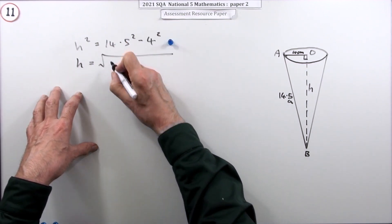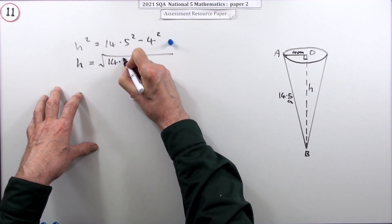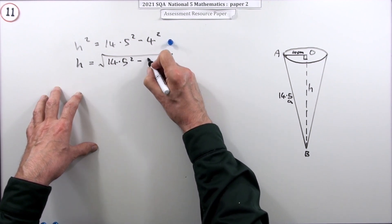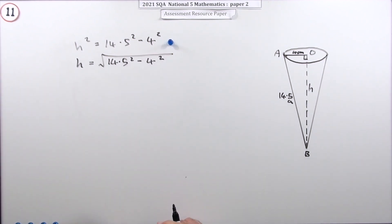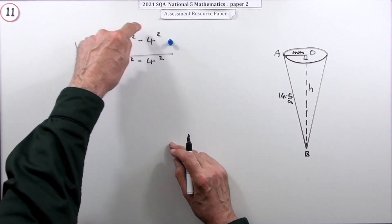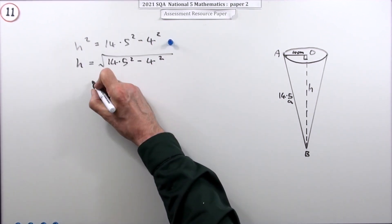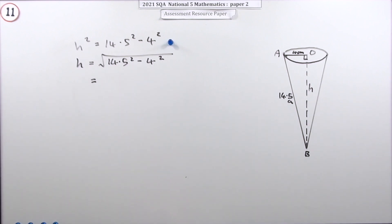...14.5² minus that short side, minus 4². Putting that down is worth a mark. You may well have just gone straight in with this: the square root of 14.5² minus 4², because after all it's a calculator paper, so you can do that in one go.